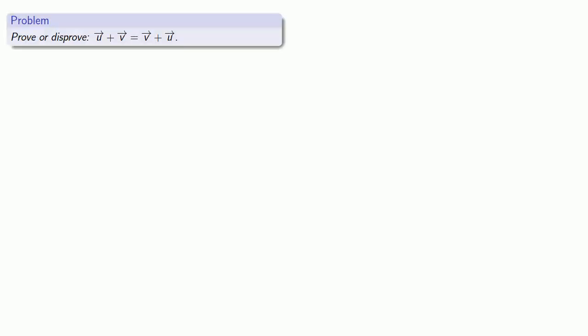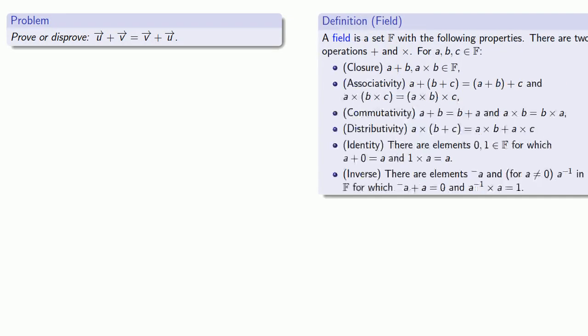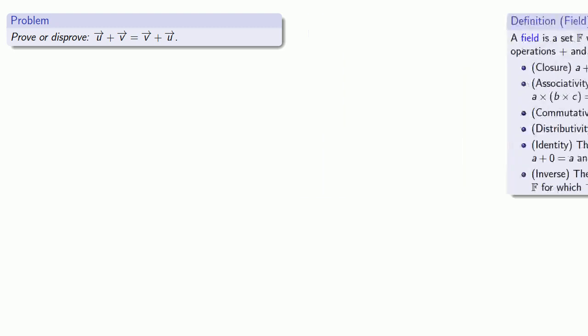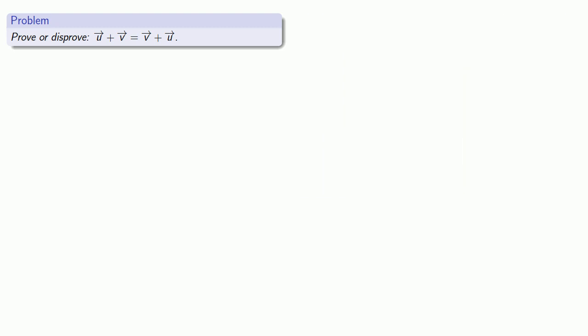For example, one useful feature which our underlying scalar field has is that addition is commutative. So we might ask whether vector addition is commutative. And so we'll prove, or possibly disprove, that the vector u plus v is equal to the vector v plus u.